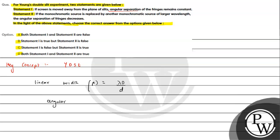The angular width theta is equal to lambda by d. So angular width theta equals lambda divided by d.